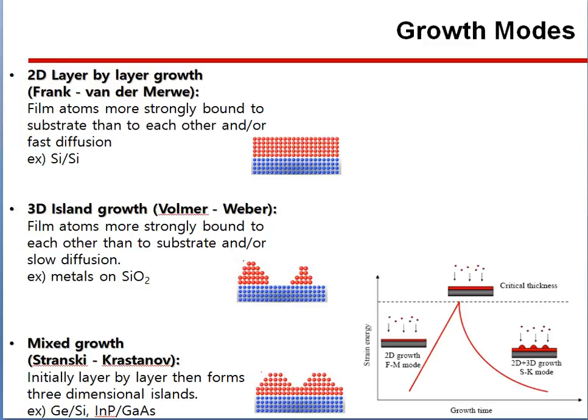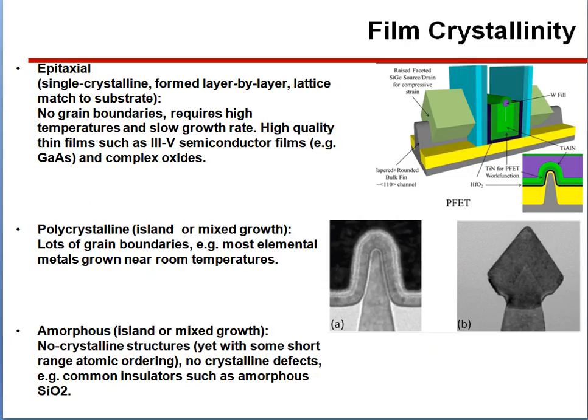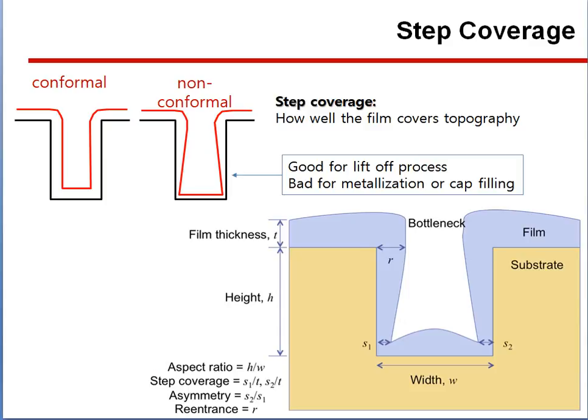Epitaxial film grows layer by layer on the substrate with no grain boundaries, requires high temperature and slow growth rate, and produces high-quality thin films such as III-V semiconductor films. Polycrystalline film has many grain boundaries and is found in most elemental metals grown near room temperature. Amorphous film has no crystalline structure. Film coverage describes how well the film covers a surface.